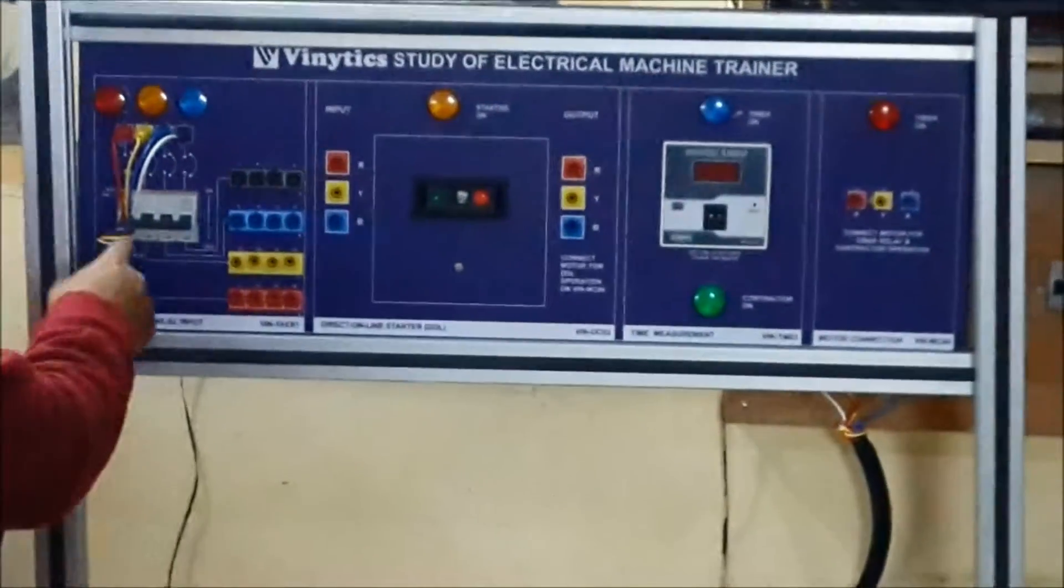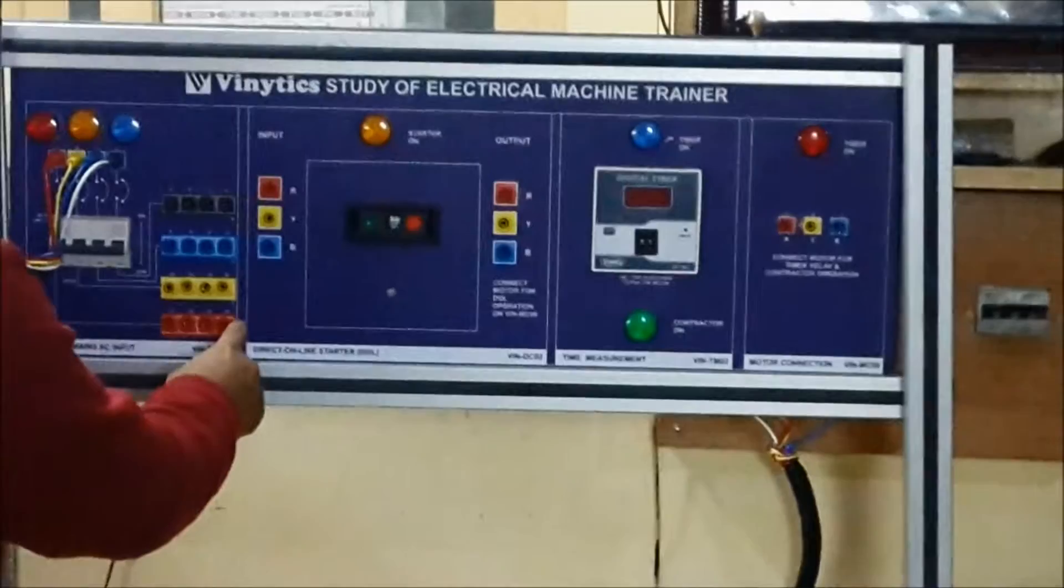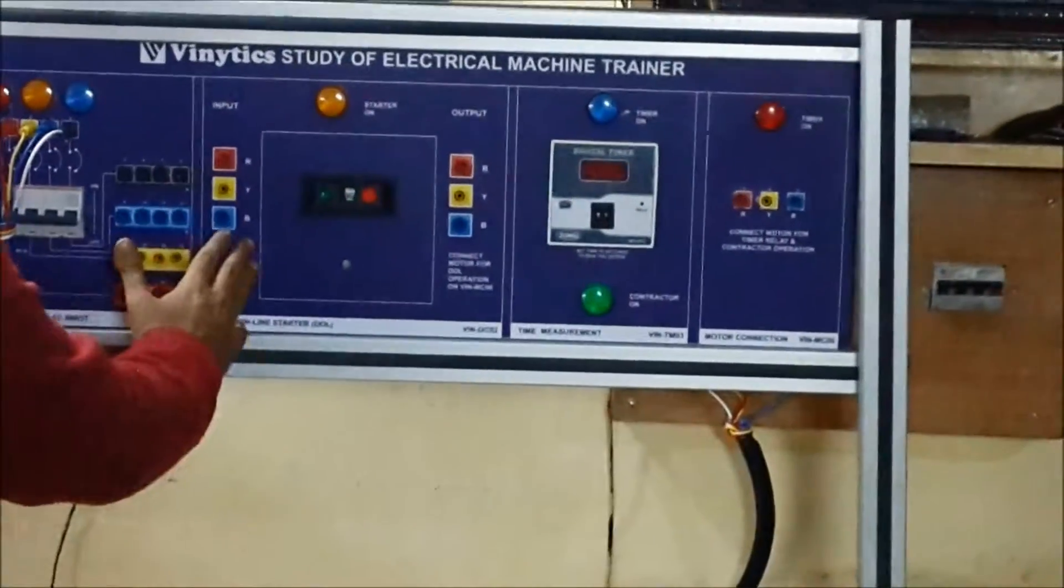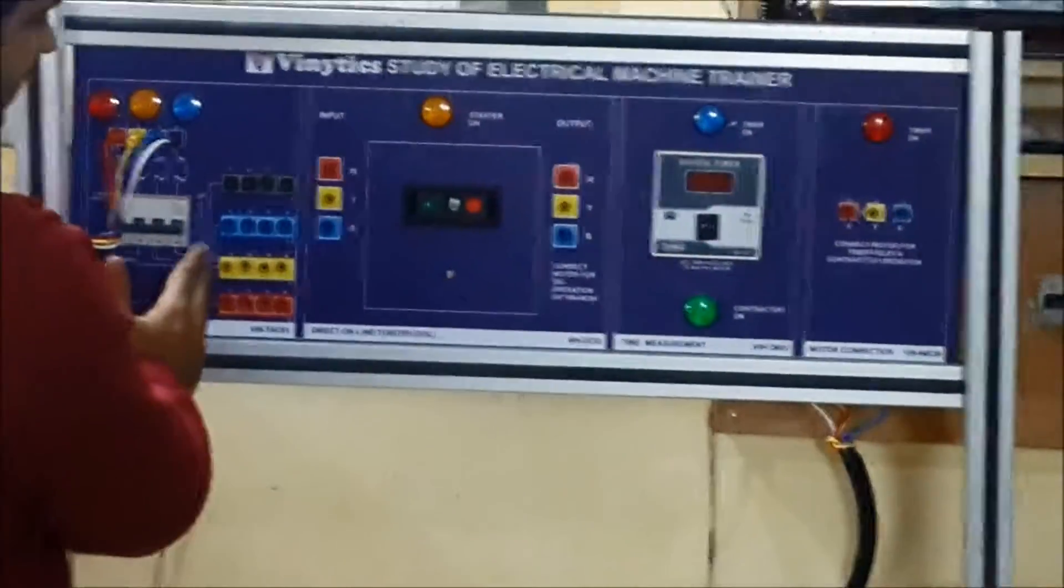First, we will give the three-phase main supply, then make the connections from R to R, Y to Y, and line to B. By making these connections, we are giving the input from the winding TAC01 to winding DC02.